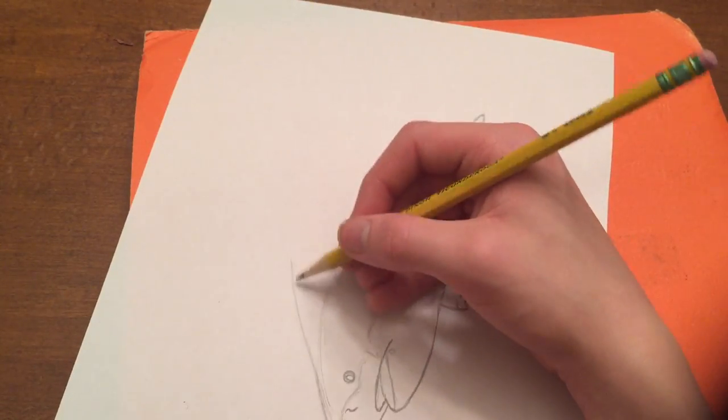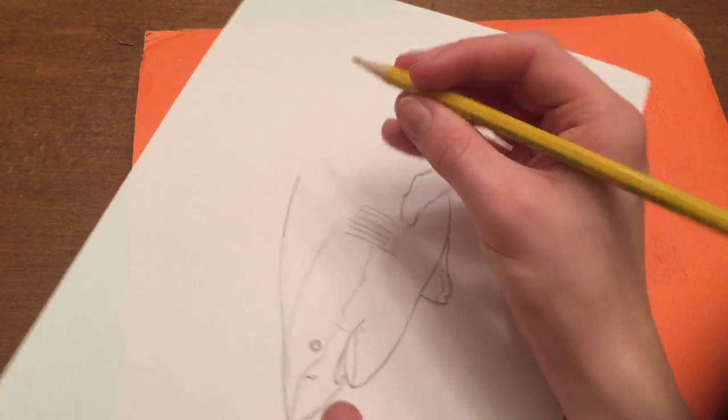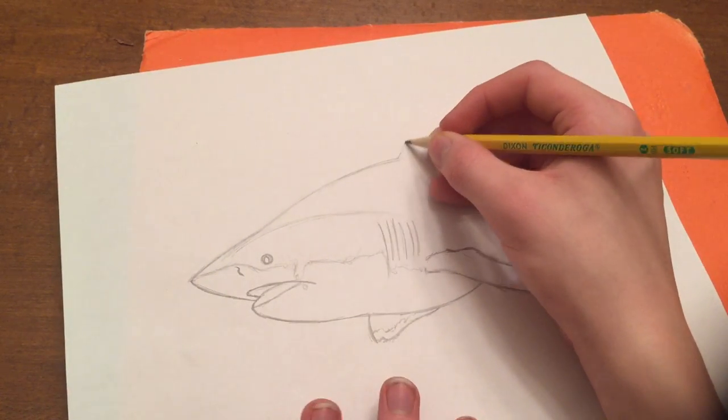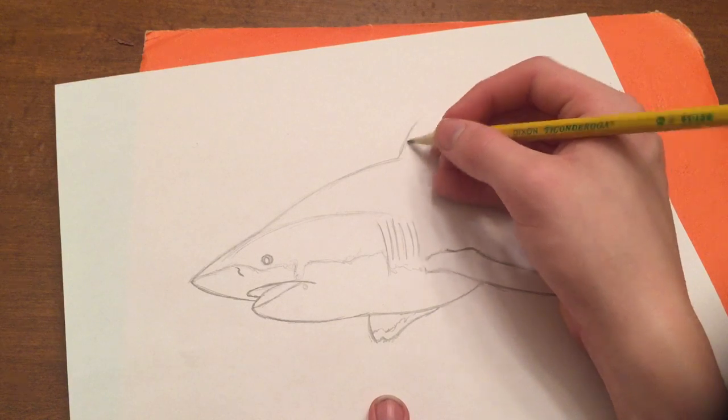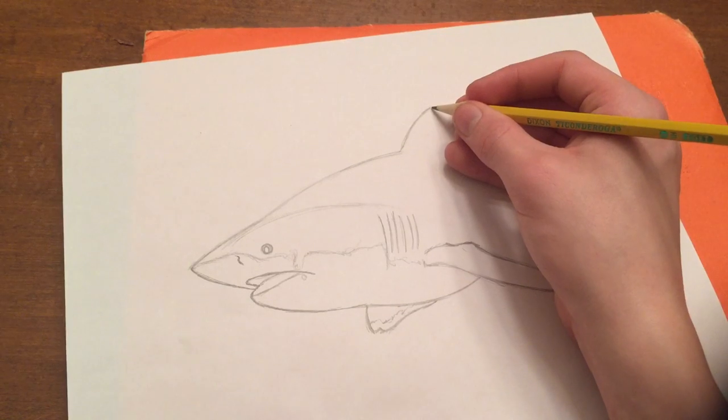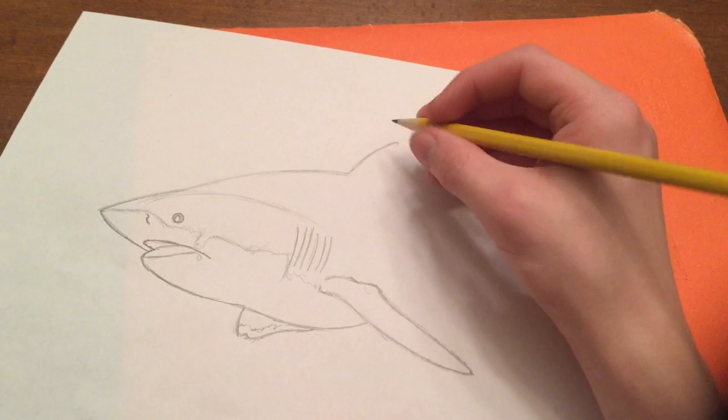And actually now, we need to extend this for the dorsal fin to come. The dorsal fin on bull sharks almost looks like the dorsal fin on dolphins. So sometimes people mistake dolphins for bull sharks or bull sharks for dolphins due to their similar dorsal fins.